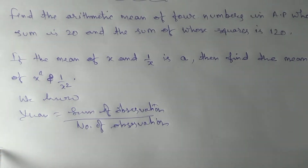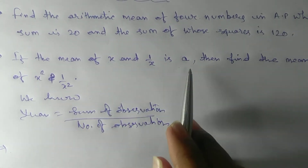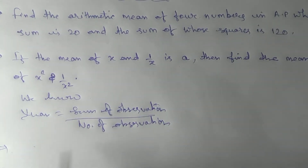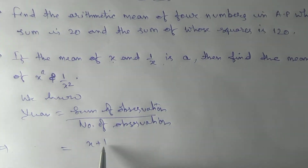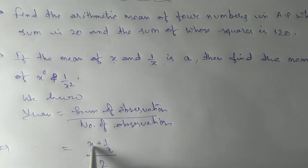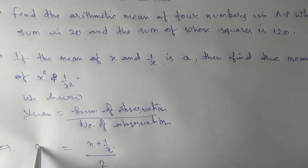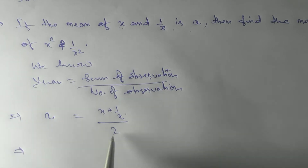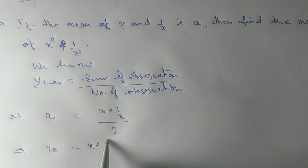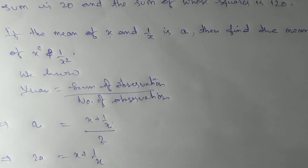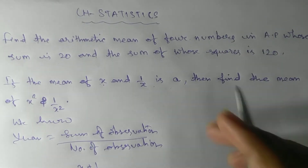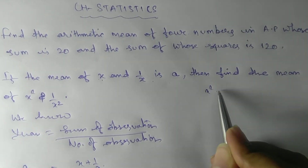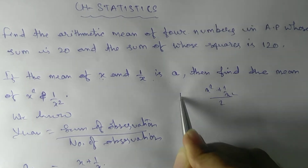Now, what they have given: mean of x and 1/x is 'a'. That means sum of observations — x is one observation, 1/x is the second — so (x + 1/x) / 2 = a. Now what we need to find is the mean of x² and 1/x², which is (x² + 1/x²) / 2.